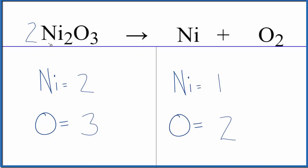let's put a two in front of the nickel three oxide. That way, we'll get an even number of oxygens, three times two. That'll give us six oxygens, two times two. That'll give us four nickel atoms.